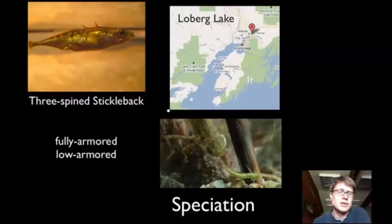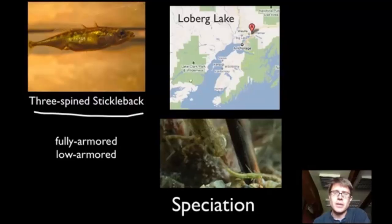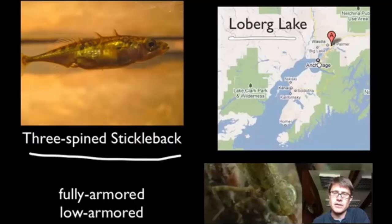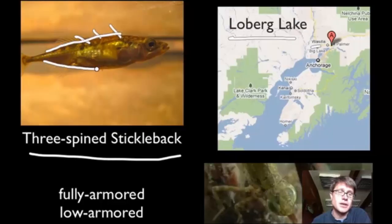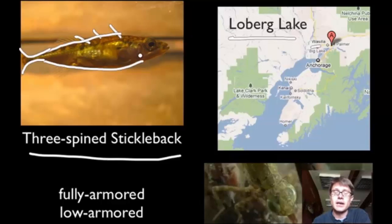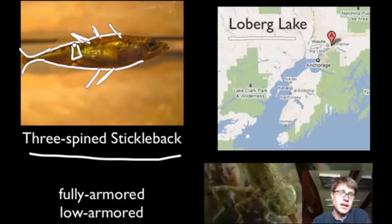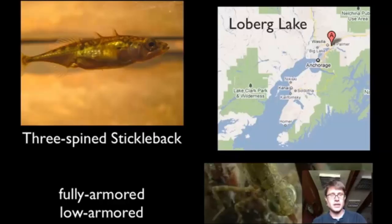Let's look at a real example of speciation: the three-spined stickleback. The study I'm looking at was in Loberg Lake, near Anchorage in Alaska, just down the road from Wasilla. Speciation is occurring right now in the stickleback. There are two phenotypes: a low armored stickleback found usually in freshwater, and a fully armored marine stickleback that spends half its life in the ocean and comes back to breed — it has larger spikes, additional spines, and plates along its sides.